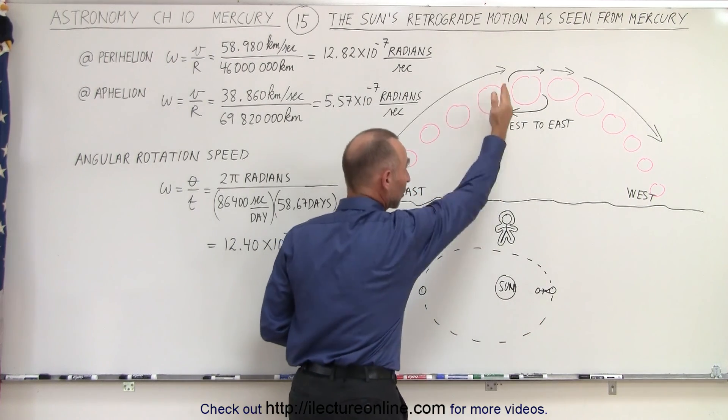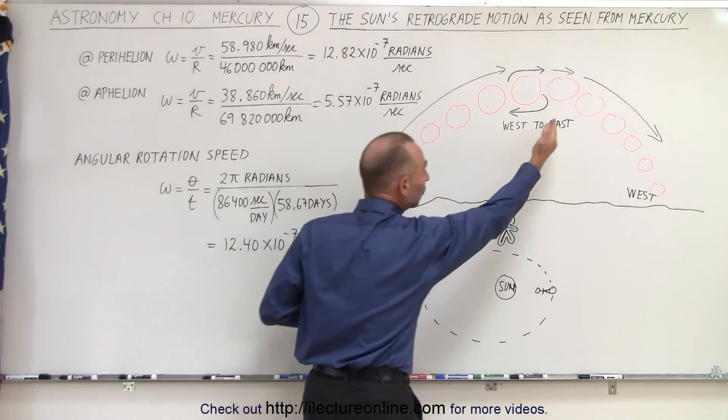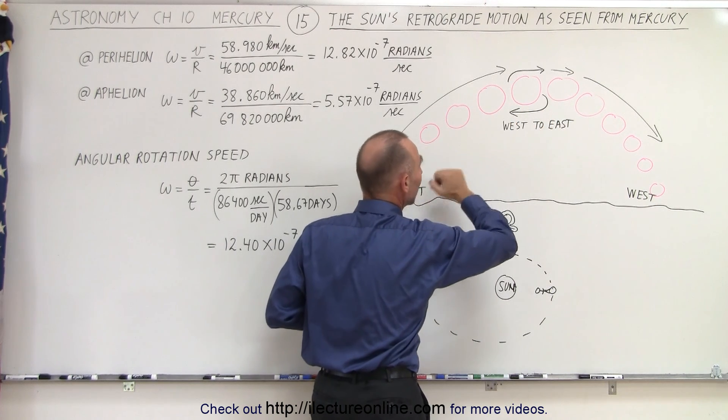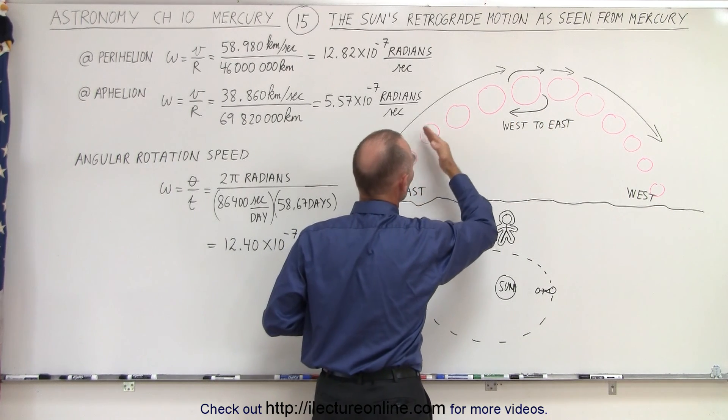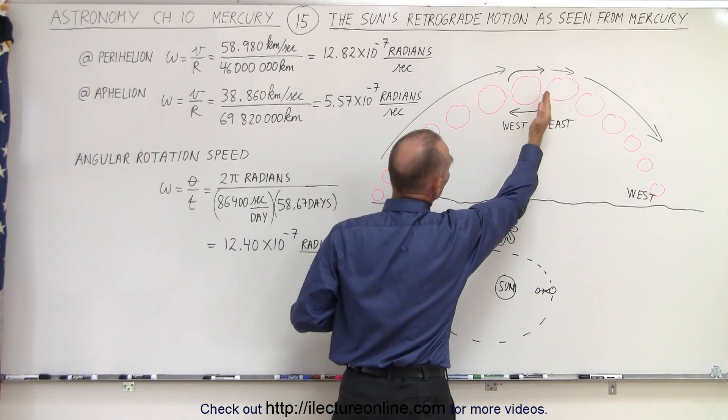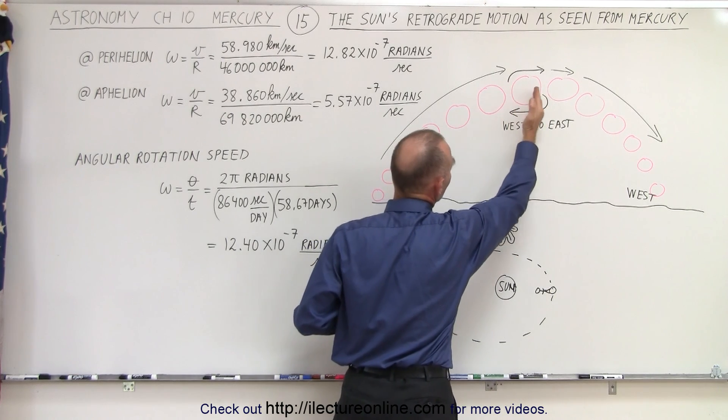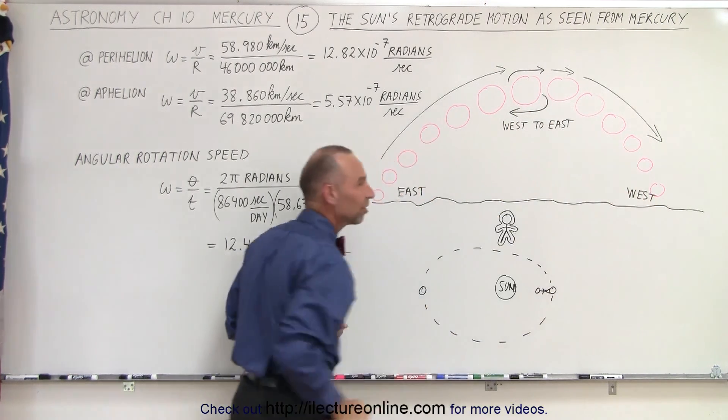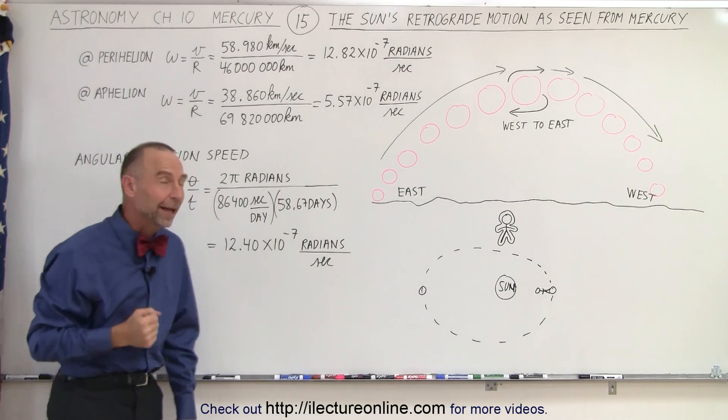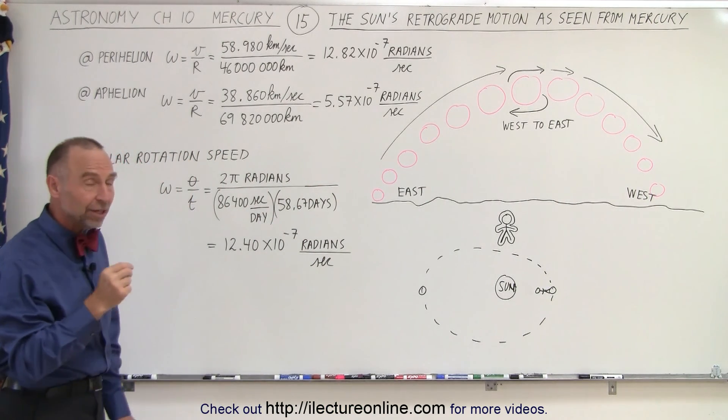The Sun will actually begin to move in the opposite direction, so the Sun will move from east to west, stop, start going back in the opposite direction, stop, and then start going back in this direction until it sets in the west.